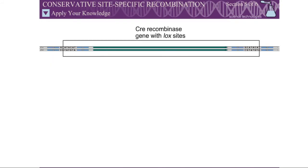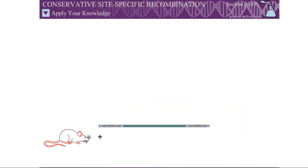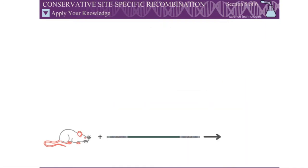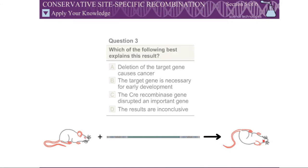Once the LOX sites and CRE recombinase gene have been inserted into the mouse genome, all of the mice die early in development before specific tissues have developed. Question 3: Which of the following best explains this result?